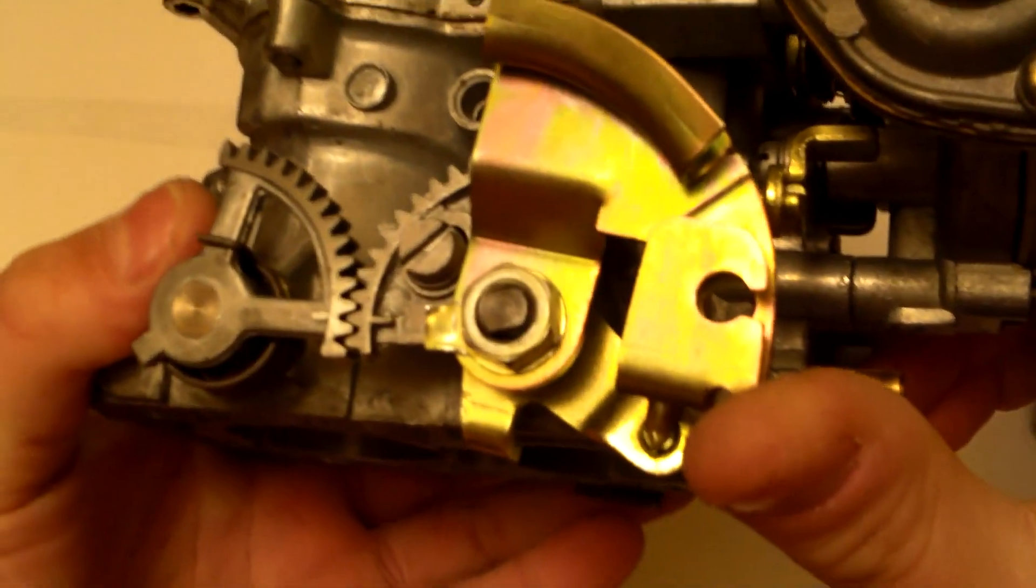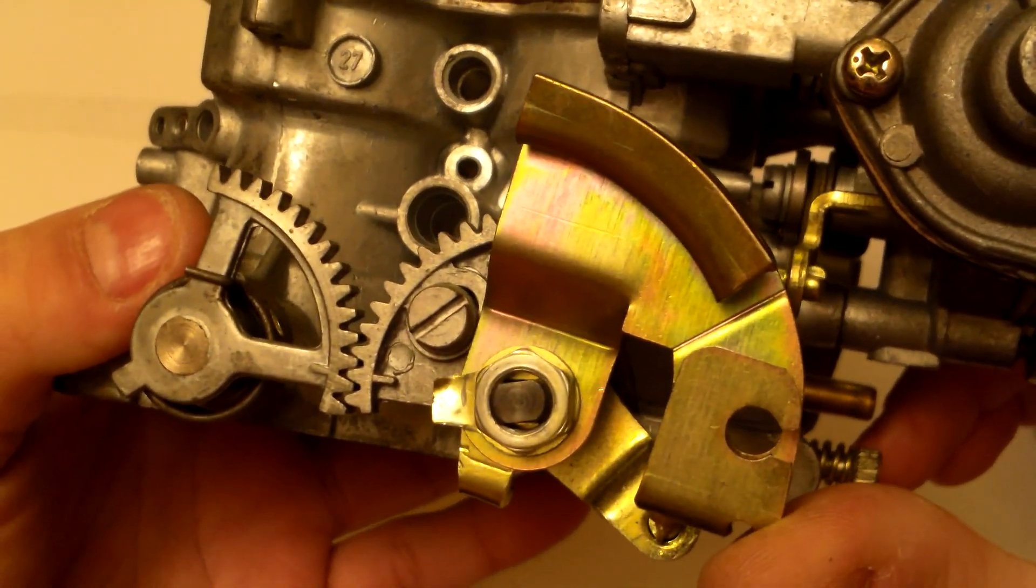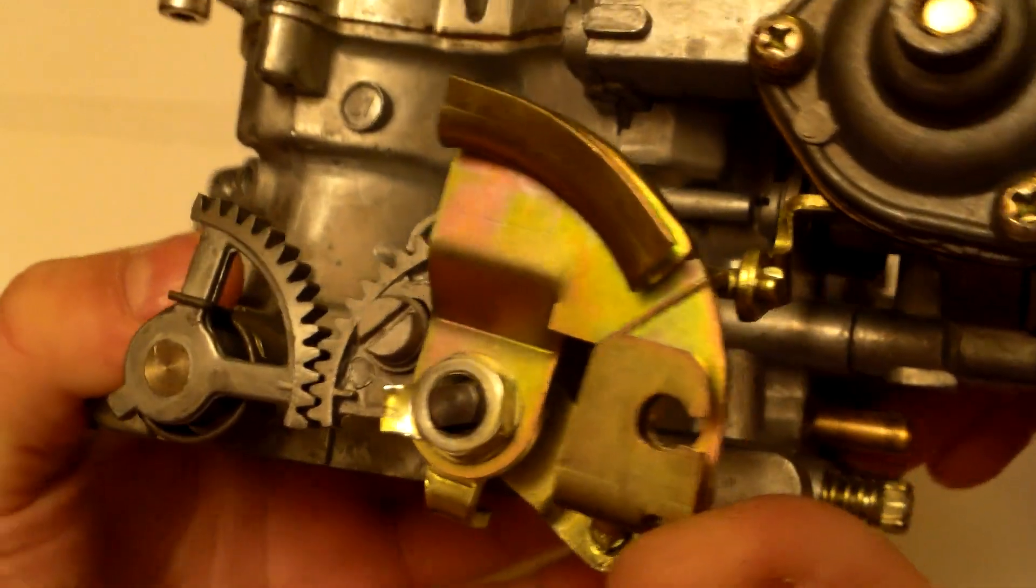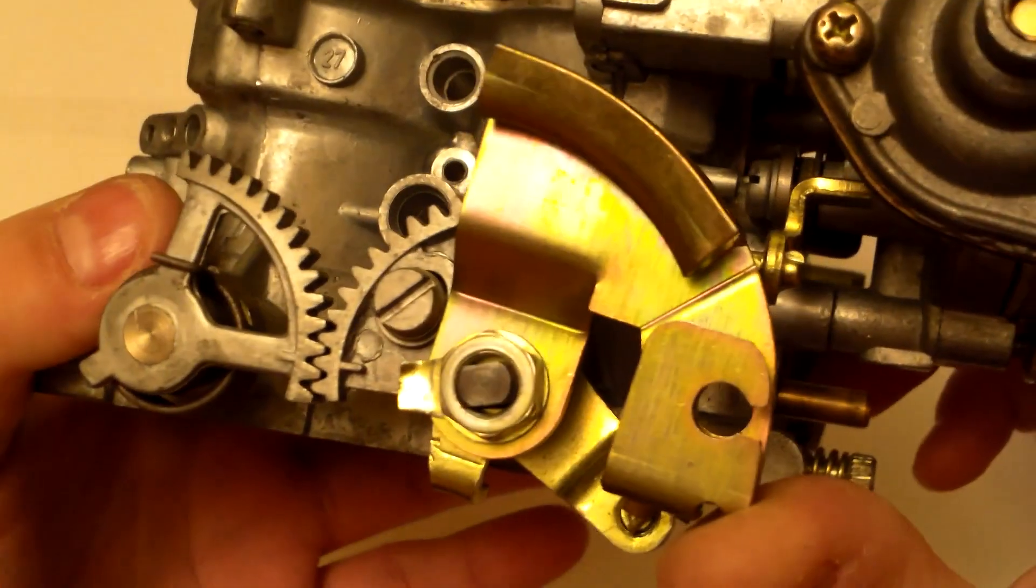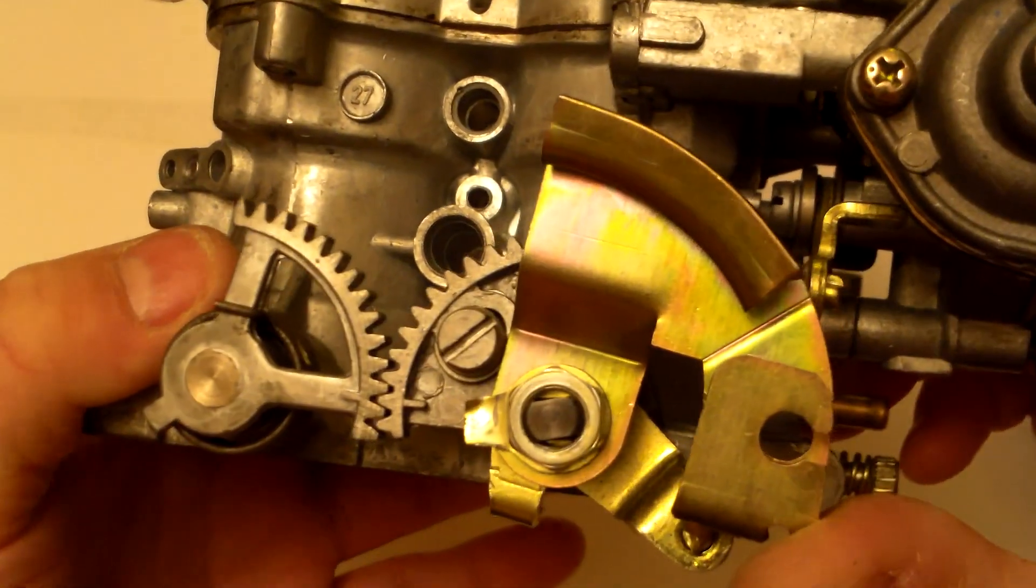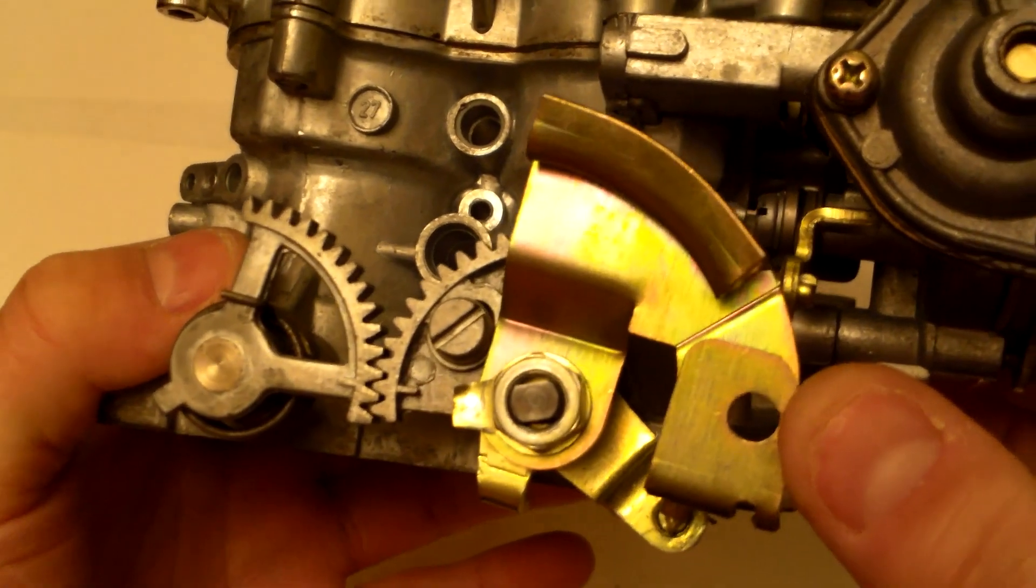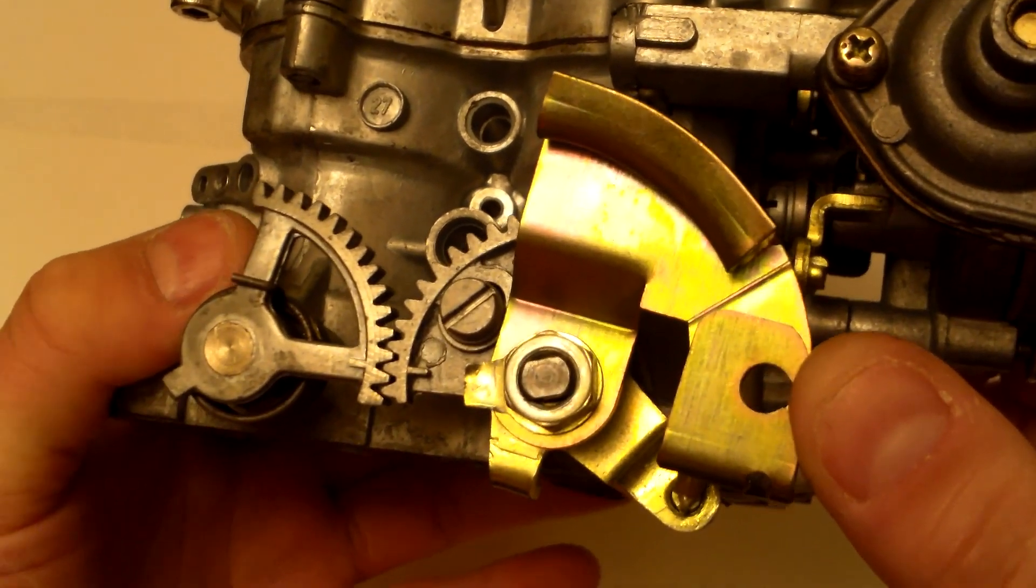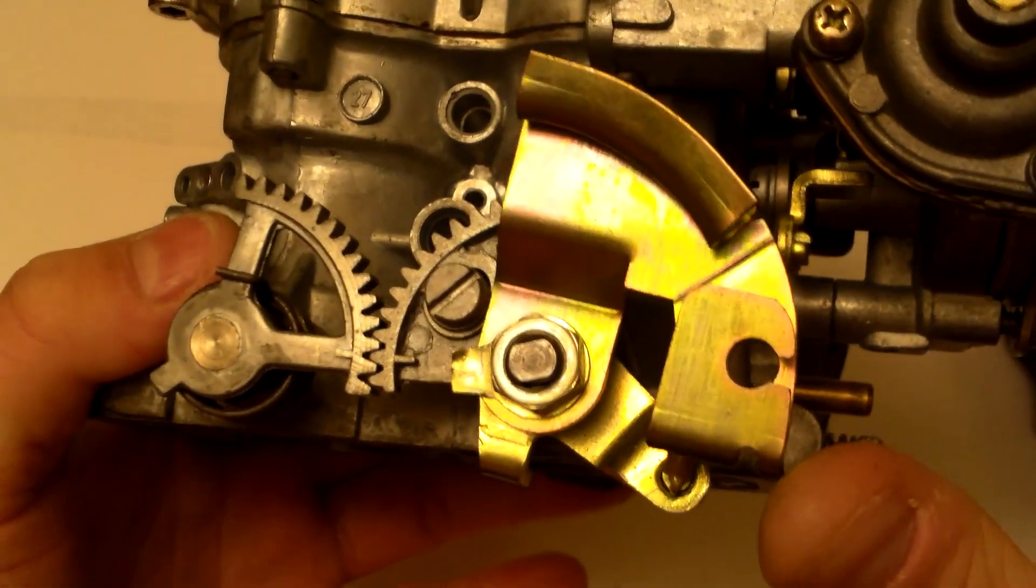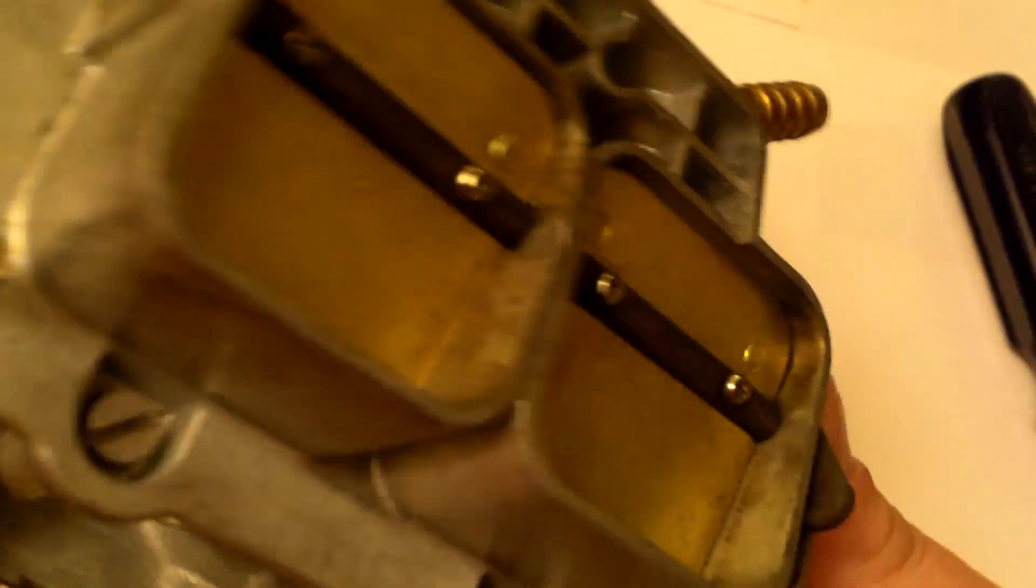This is a kit for Weber carburetors that allows you to adapt Japanese throttle cables to your car. It says in the directions if that hole is not big enough to drill it out, so it can fit a wide variety of throttle cables.